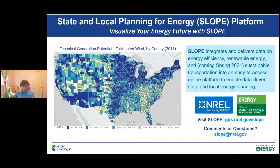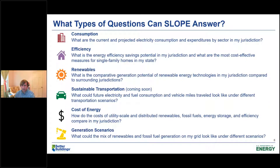One of those data visualizations is the map presented here on this slide — the technical generation potential for distributed wind mapped by county across the United States. Before we get into a live demonstration of SLOPE, I want to give you a flavor of the types of questions SLOPE can answer, how state and local governments are using SLOPE, and the data available in SLOPE.